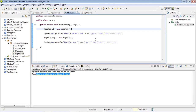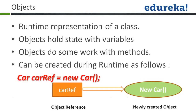Using this object I am accessing the variable type as well as the variable lives. So I am using the content of the class via its object — that is why an object is called the runtime representation of a class, or an instance of a class. Objects also hold state with variables.